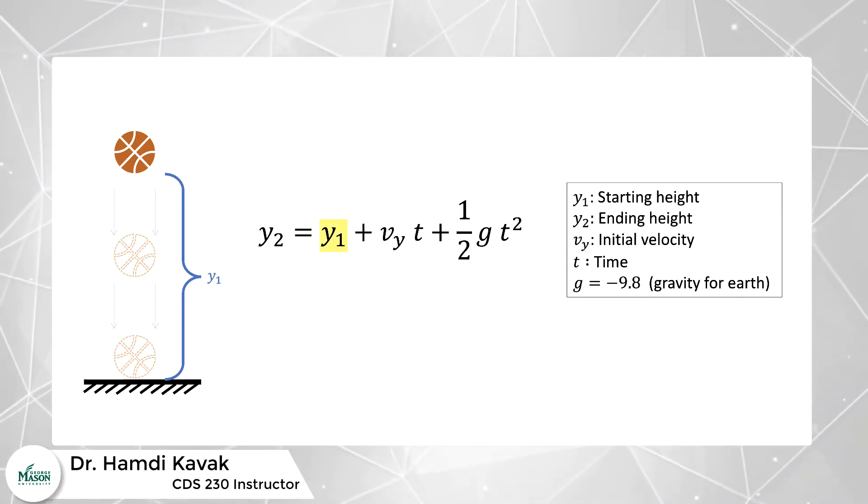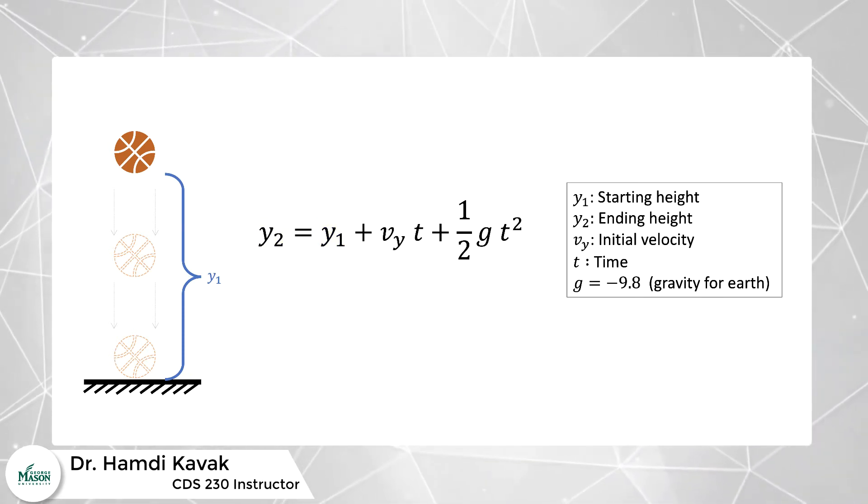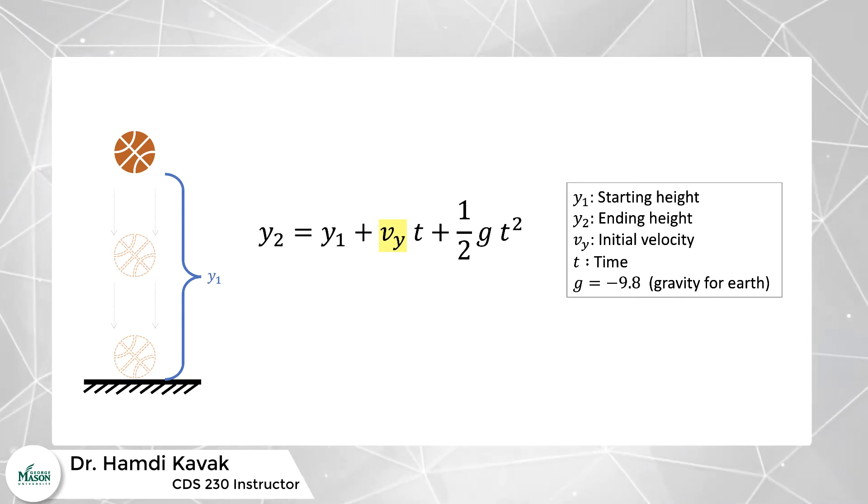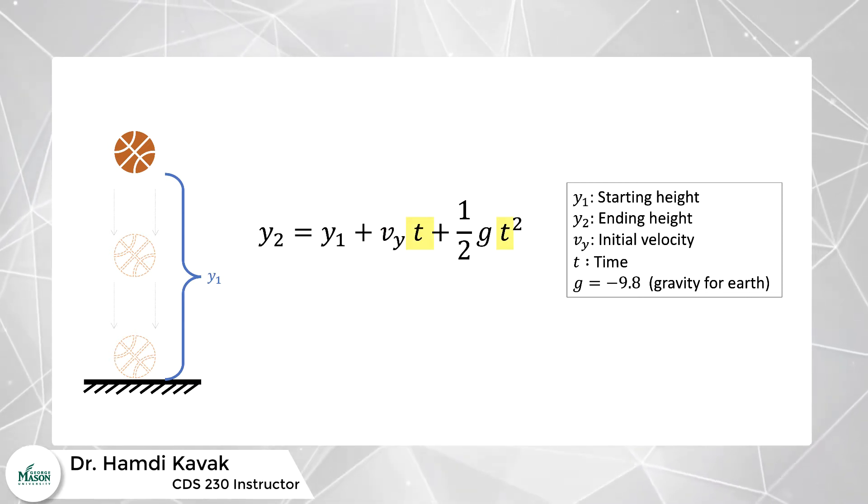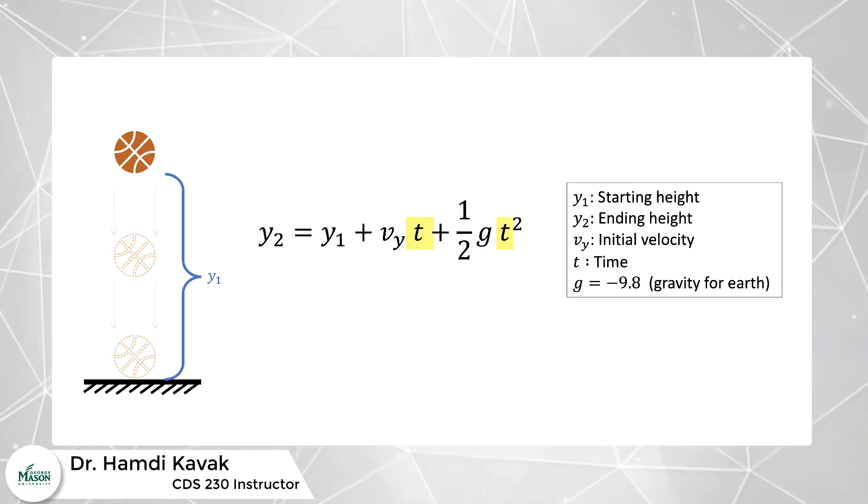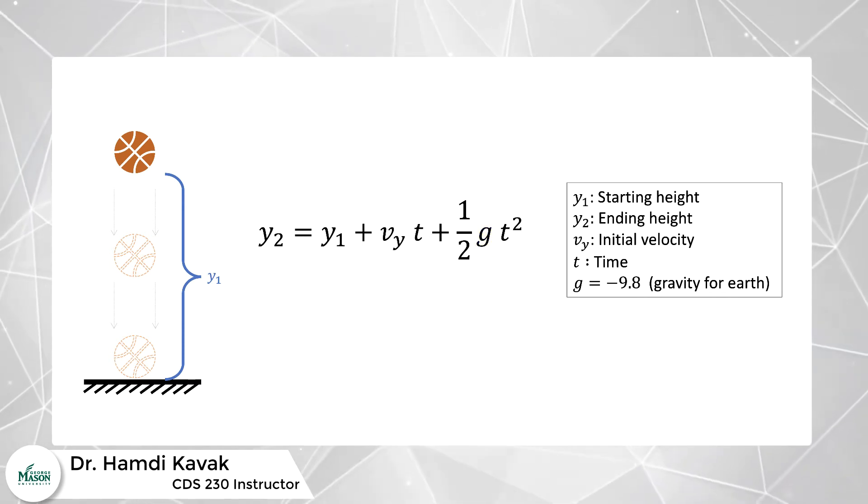y₁ is the starting height, which is 40 meters. y₂ is the ending height; we don't know this yet. vᵧ is the initial velocity, which is zero because we are just dropping the object from 40 meters. t is the time passed, which is 2.5 seconds for this question. And finally, g is the gravity, which is 9.8 meters per second squared. Here we put the minus sign because it indicates a downward acceleration.